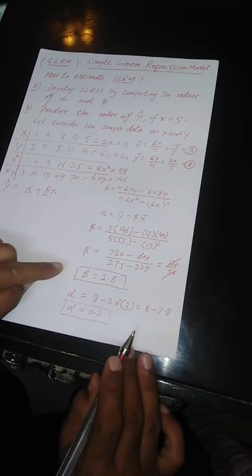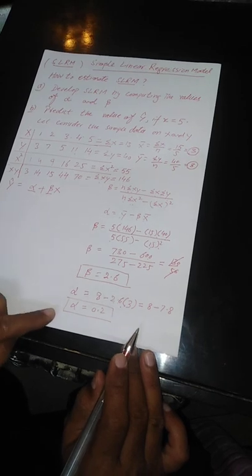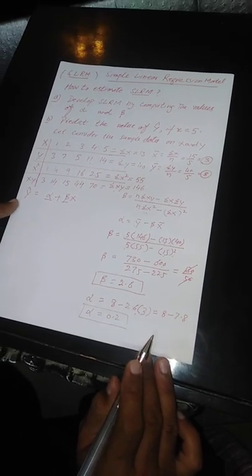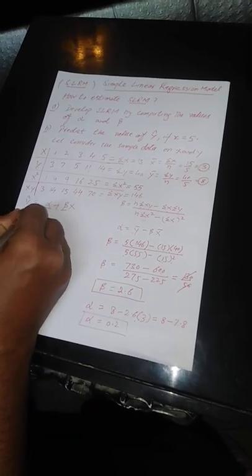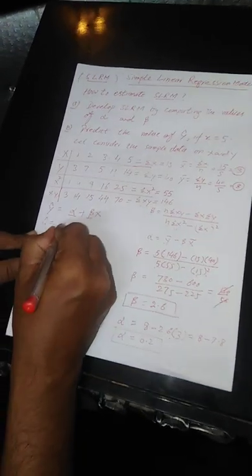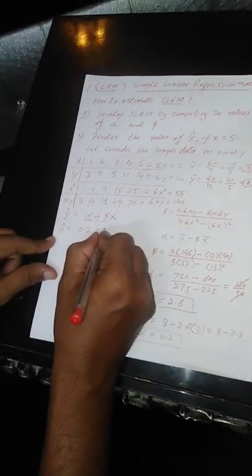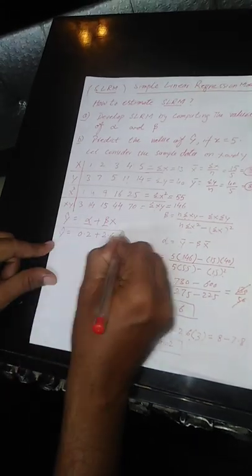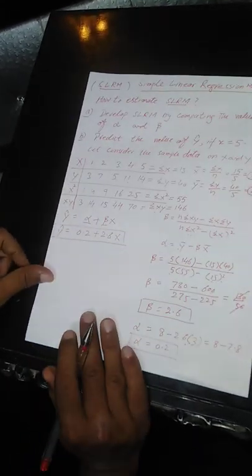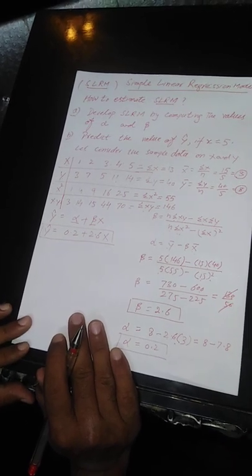Here are the values of beta and alpha. We now put these two values into the regression model to develop the simple linear regression model. So ŷ is equal to 0.2 plus 2.6x. This is our fitted simple linear regression model.